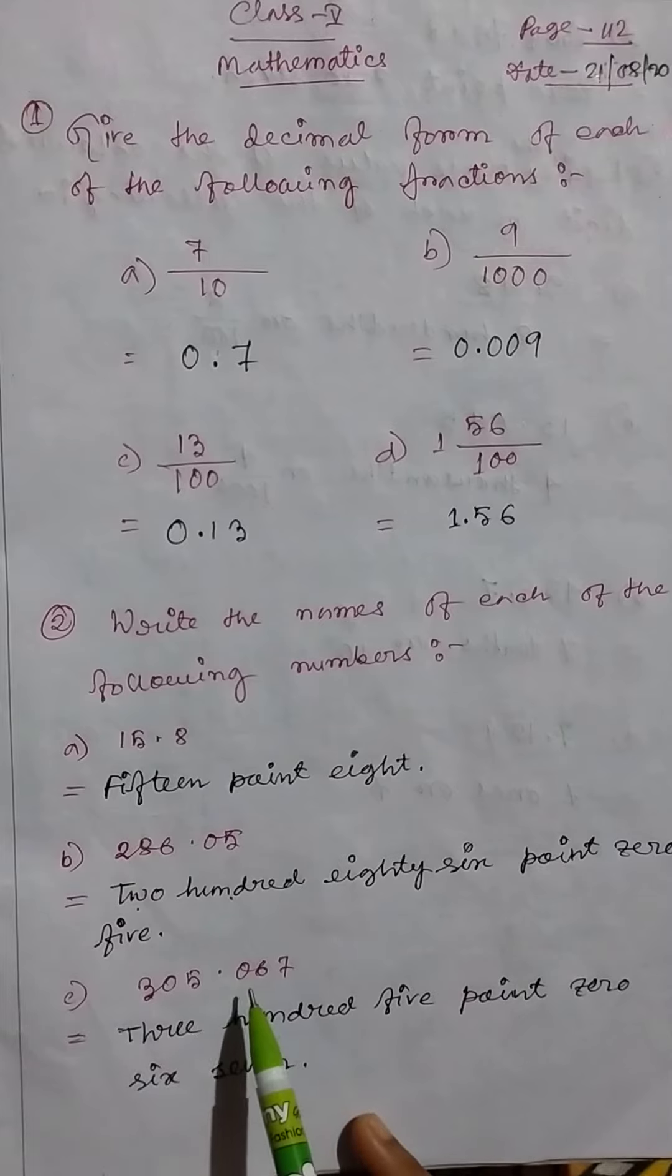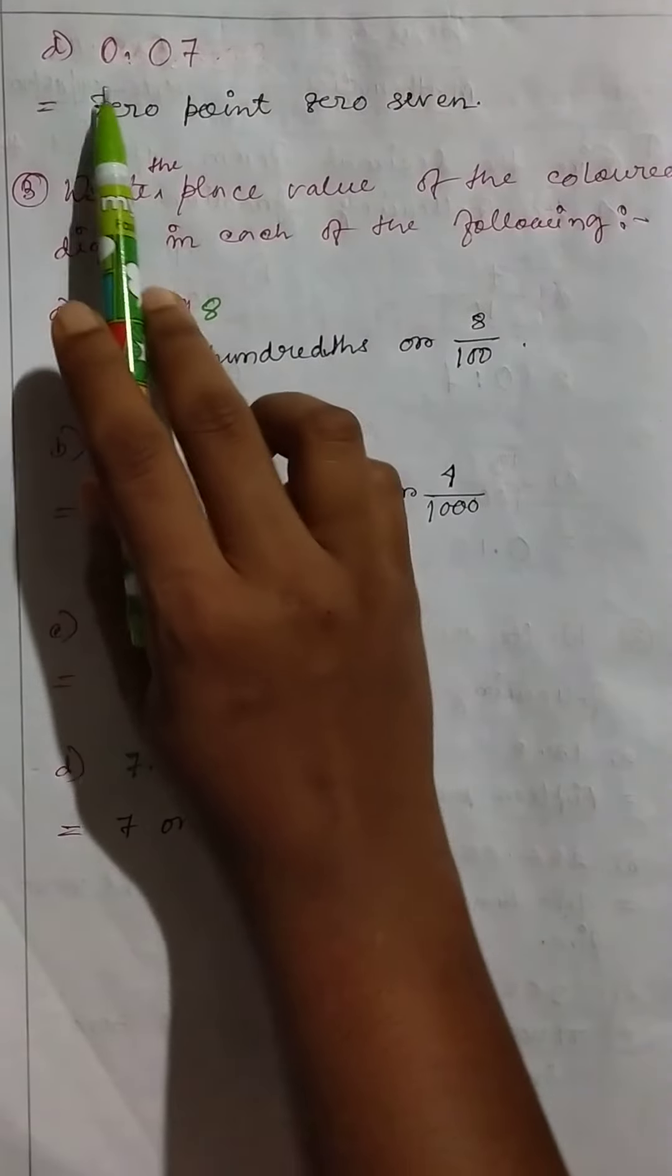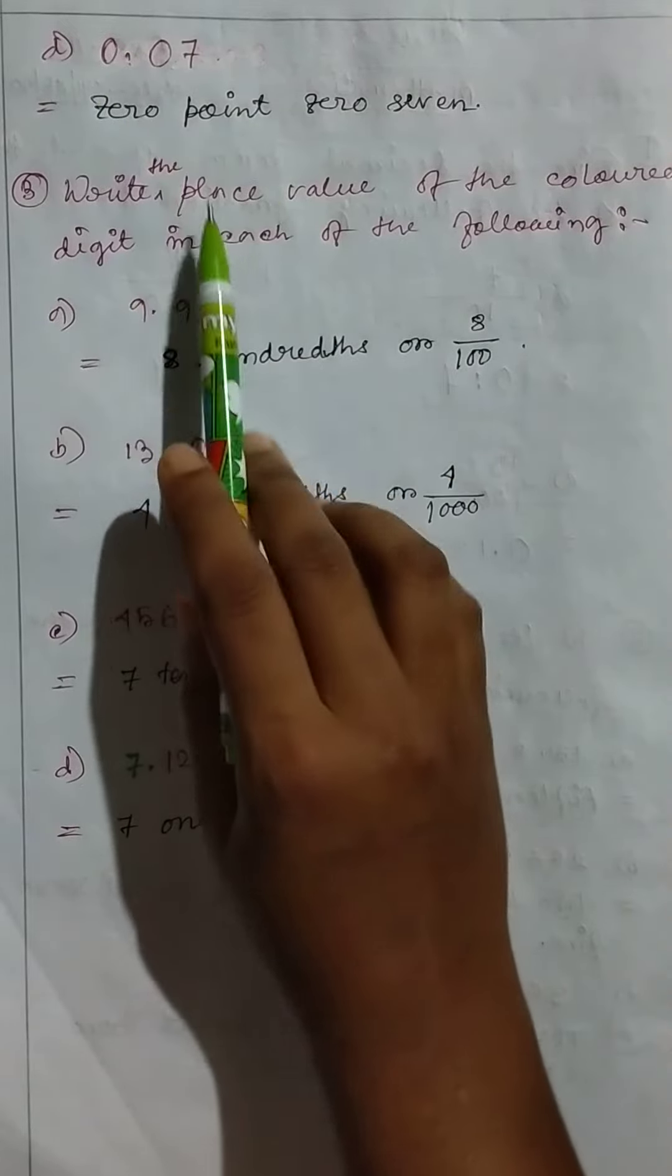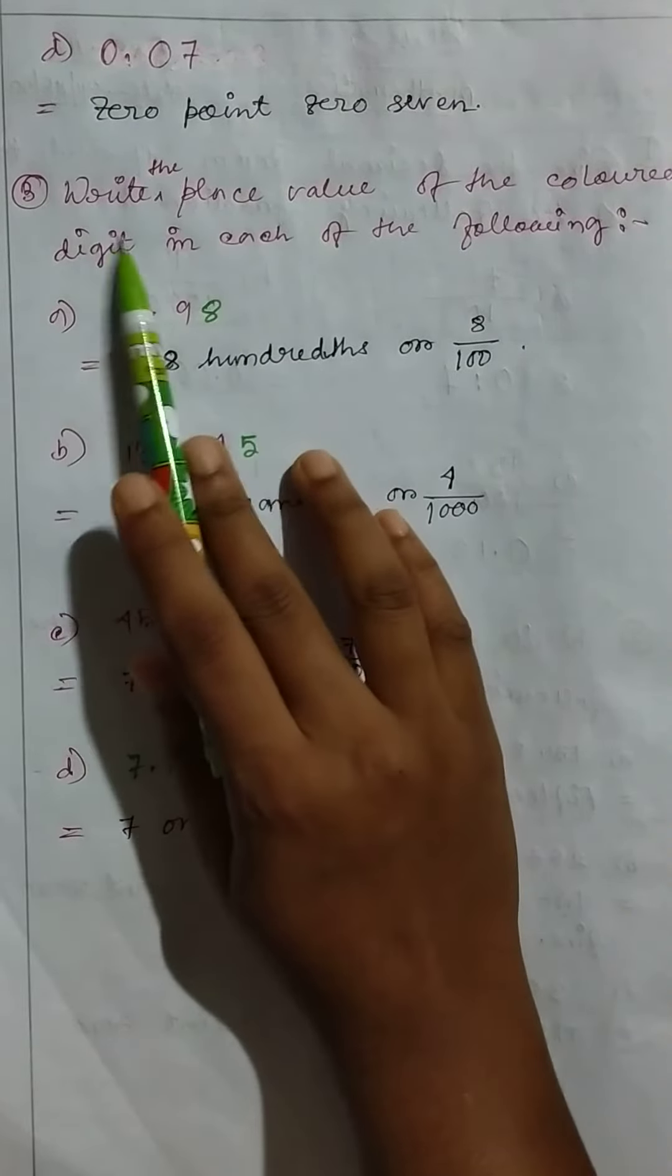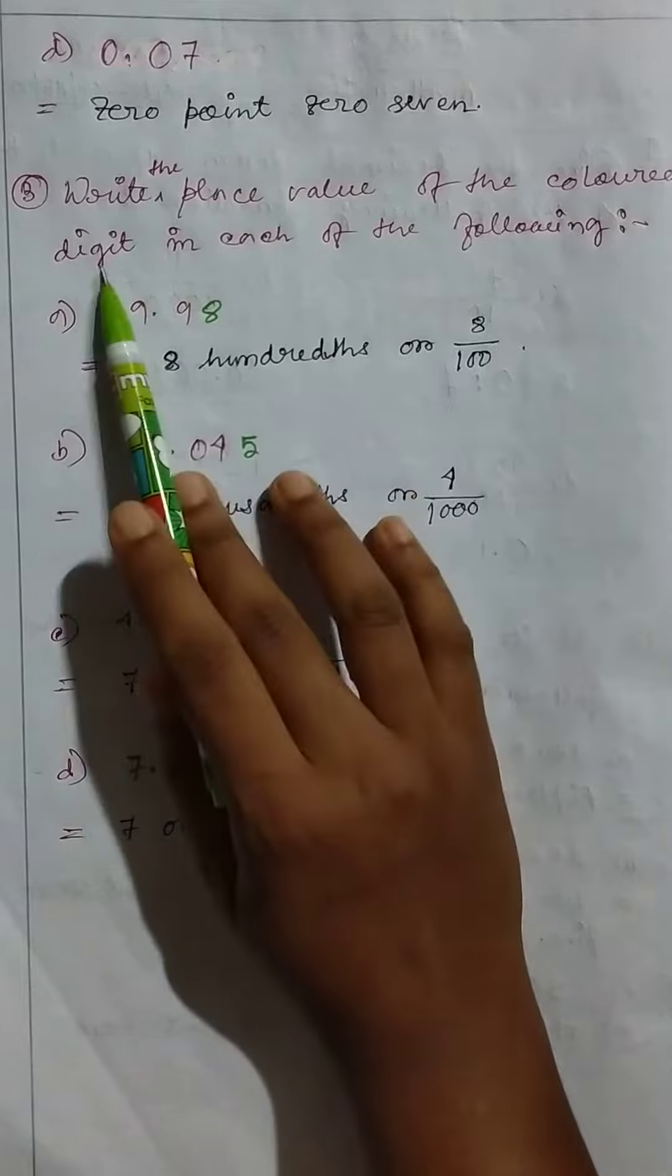Then zero point zero seven. Then question 3: Write the place value of the colored digit in each of the following.